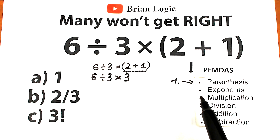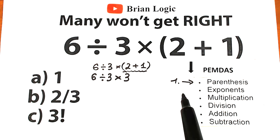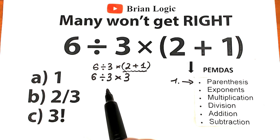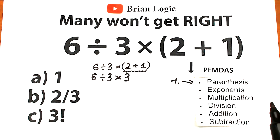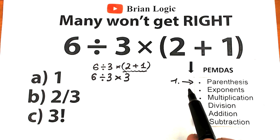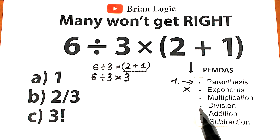Next step: exponents. Let's check whether we have any exponents — maybe squares or cubes. I don't see any. We don't have any exponents, so we just skip this part.